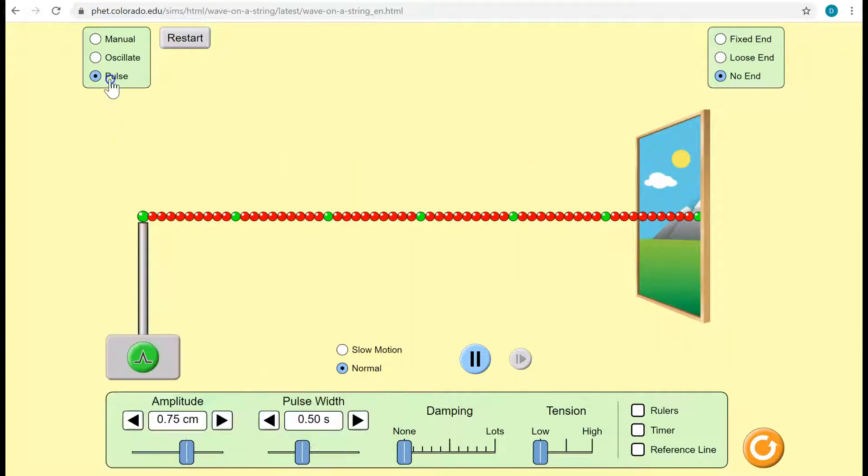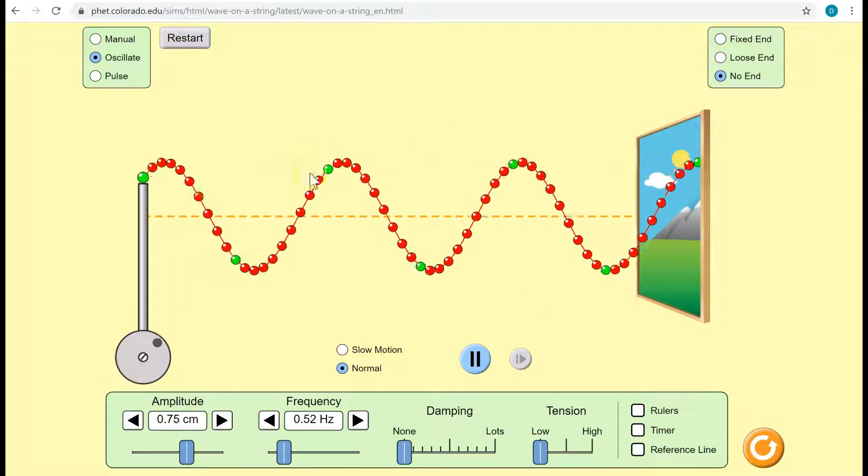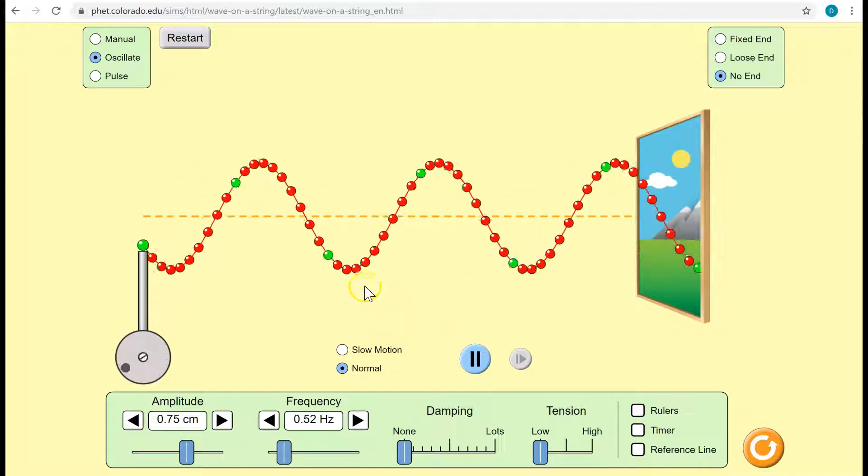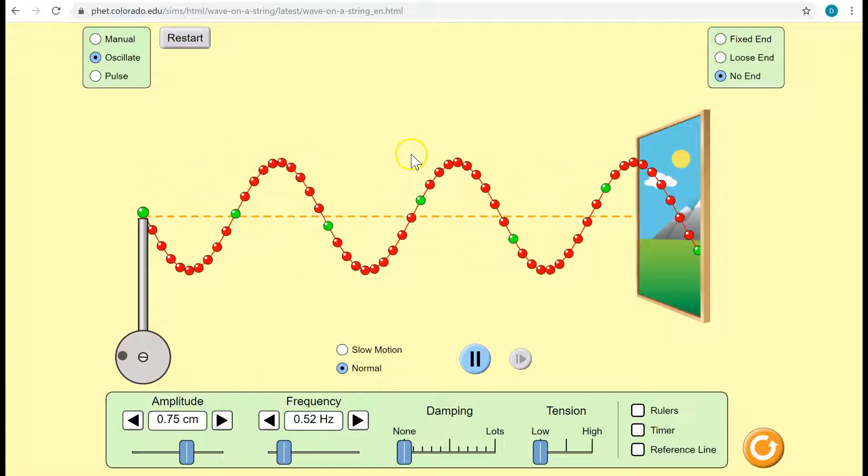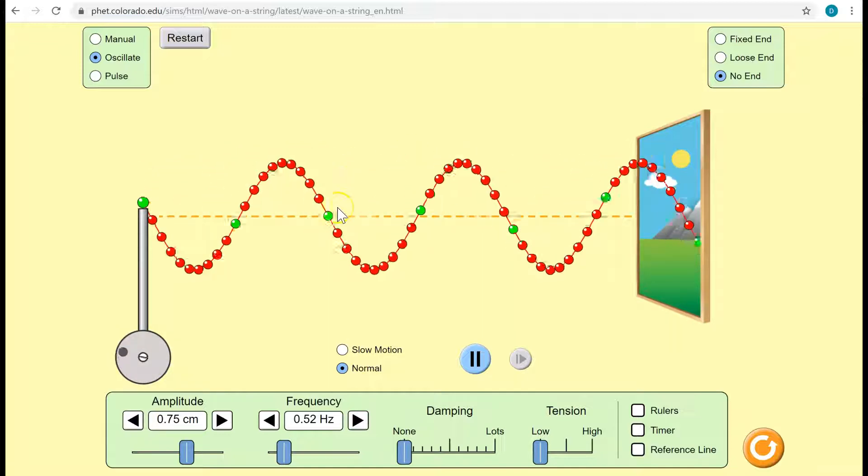By contrast, if we do a single pulse, we call this literally a pulse wave. Back to continuous or progressive waves. Progressive waves transfer energy through the medium via these oscillations of the particles.